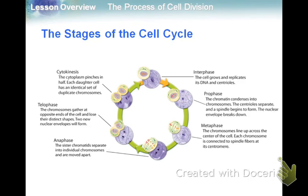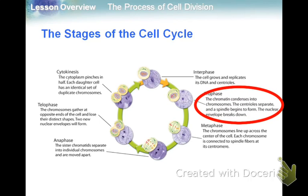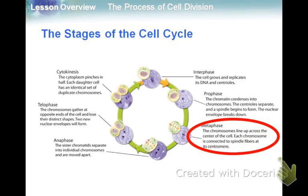Then we have prophase: chromatin is condensing, centrioles are separating, the spindle forms, and the nuclear envelope and nucleolus break down — preparation. Then metaphase: chromosomes line up at the center of the cell, and the spindle fibers connect to the centromeres.